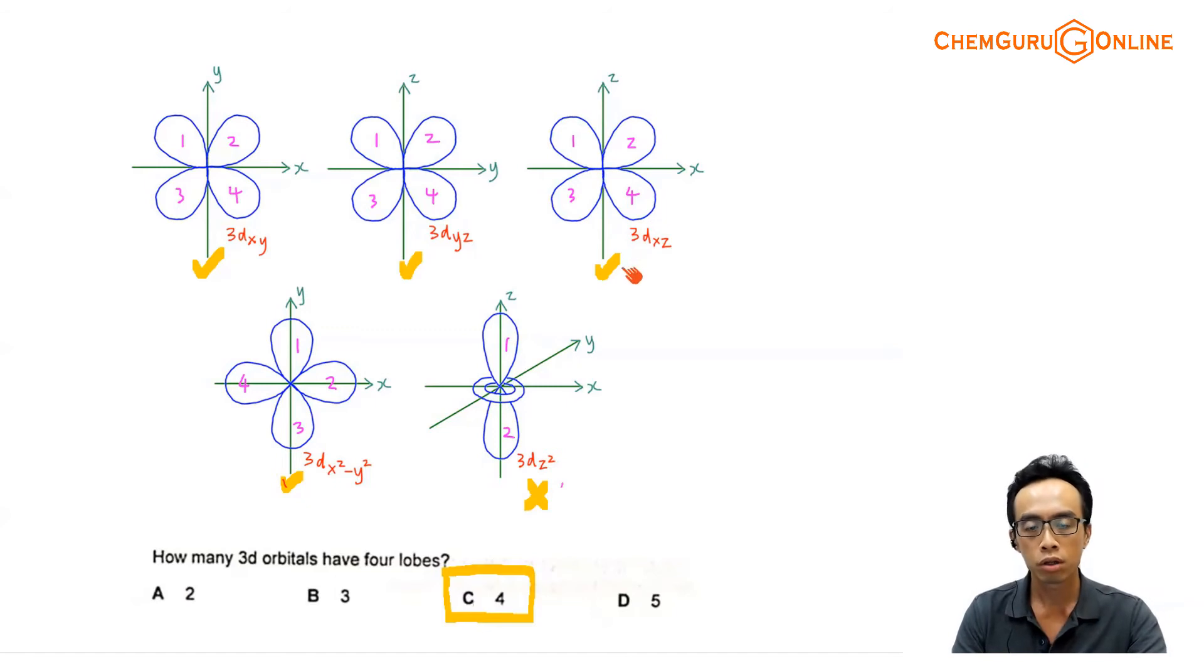Now of course, based on the shapes of our d orbitals, we actually have 4 of them that looks exactly the same. We call it a clover leaf shape, or we have 4 lobes. To me, it looks like a butterfly. And if I consider 4 of them, they actually have the exact same shape and same size, but they're just pointing in different directions, in different orientations.